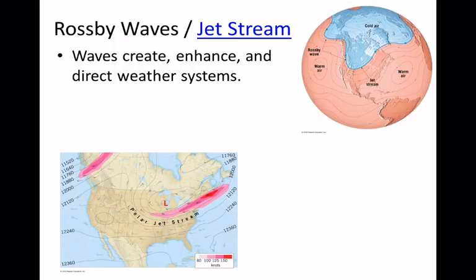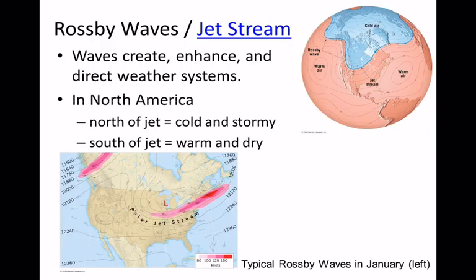Up at the top you can see the cold air — maybe that's the polar cell going all the way around — bumping up against the Ferrel cell. The jet stream is right over that intersection, between the cold and the warmer air. In the Northern Hemisphere, if you are above the jet stream, you're generally going to be cold and maybe stormy. If you are below the jet stream, you should be warm, if not warm and dry.